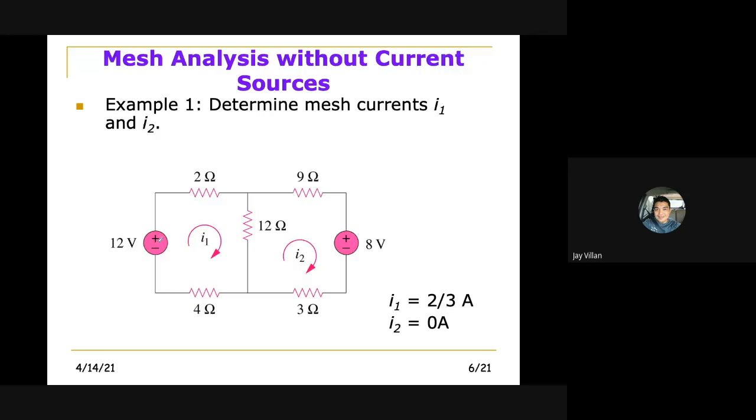So again, if we leave at the positive source, a positive terminal of your 12-volt source, so here we say at mesh 1, that is 12. So then we pass through the 2-ohm resistor.